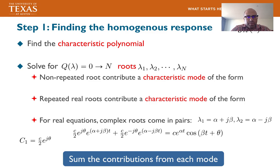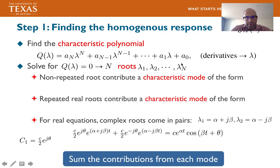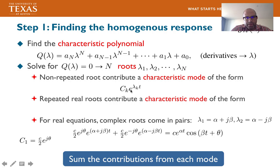Step one: finding the homogeneous response. We determine the characteristic polynomial Q(λ) = a_n·λⁿ + a_{n-1}·λⁿ⁻¹ + ... + a_0. Effectively, you replace derivatives with a variable λ, giving a polynomial with n roots: λ_1 through λ_n. For a non-repeated root, the characteristic mode has the form c·e^{λt}, where c is a constant solved using initial conditions.